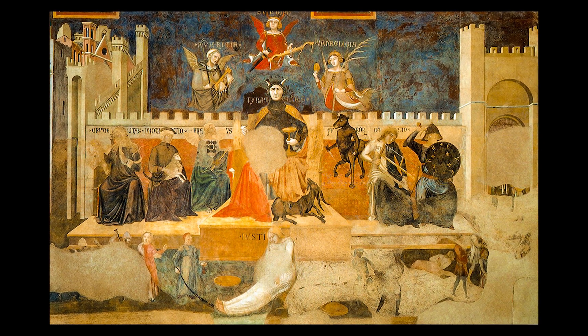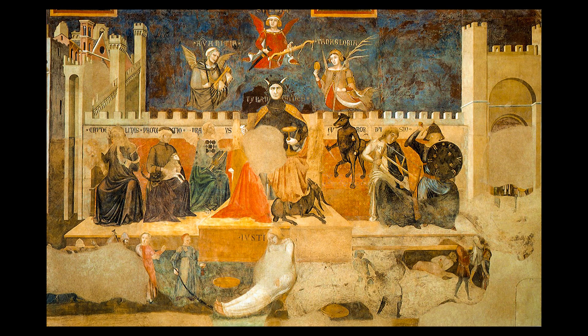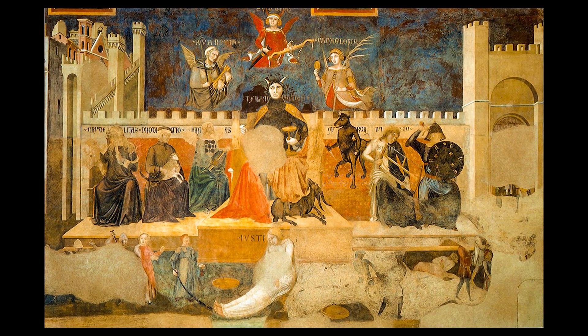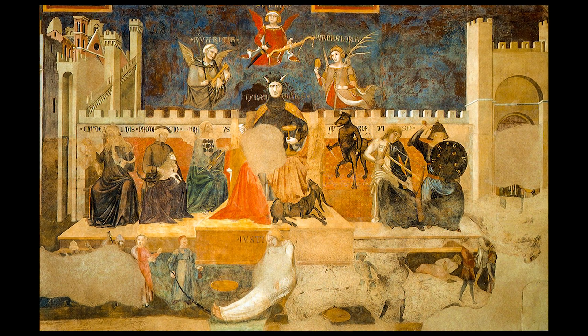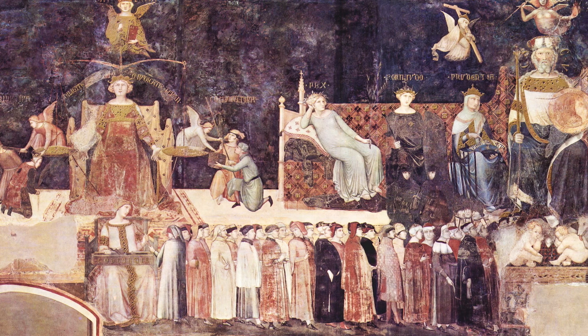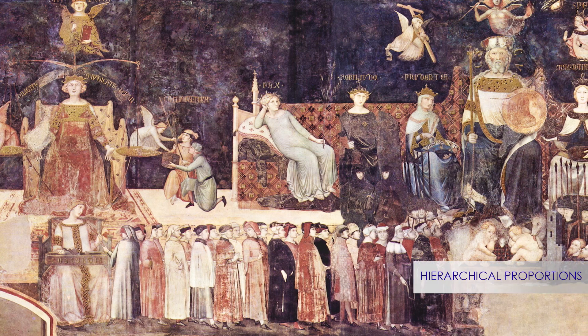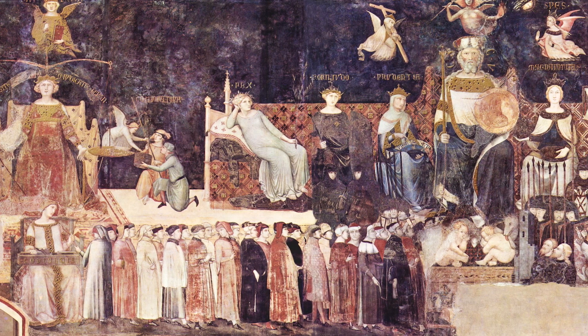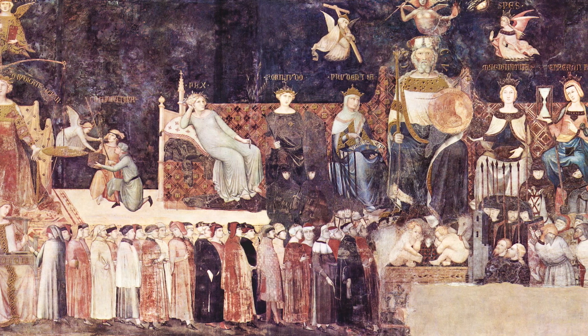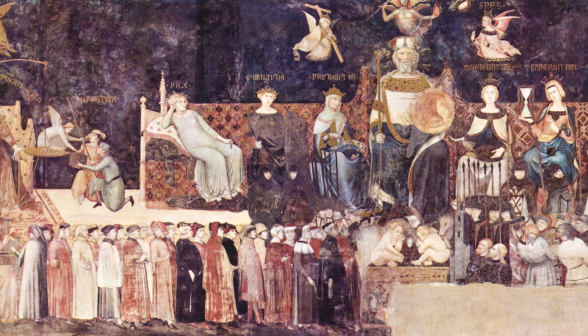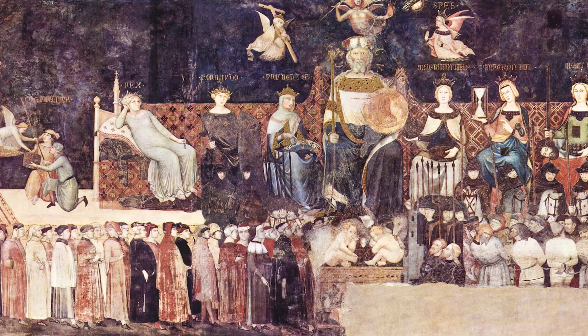One of the best examples is the extraordinary series of frescoes painted by Ambrogio Lorenzetti between February 1338 and May 1339, called The Allegory of Good and Bad Government. The paintings are literally filled with allegorical characters. It's clear the use of hierarchical proportions, with the smaller figures — the citizens — who stand in front of the virtues, the bigger figures. Each of them is identified by a text, just to make sure anyone who could read wouldn't confuse their meanings, but also by clear symbols.